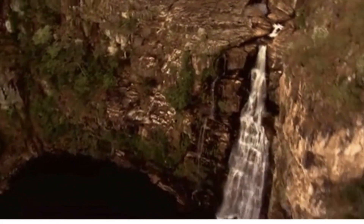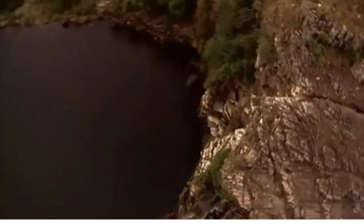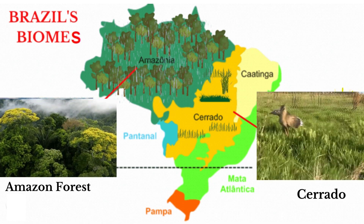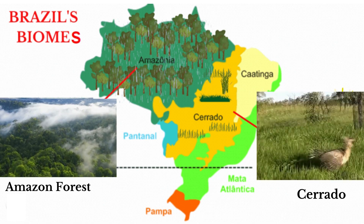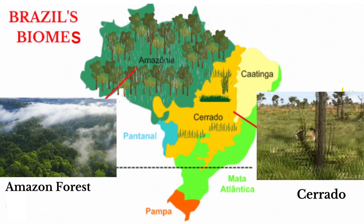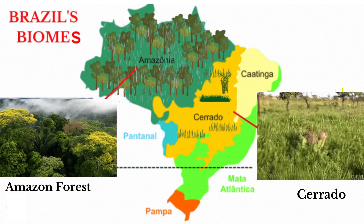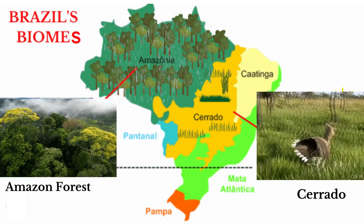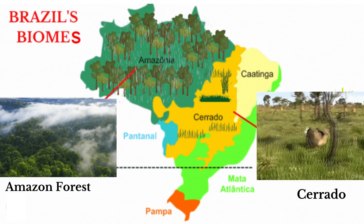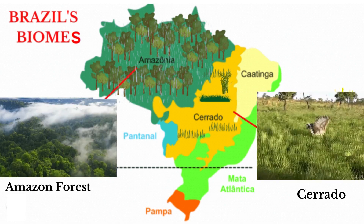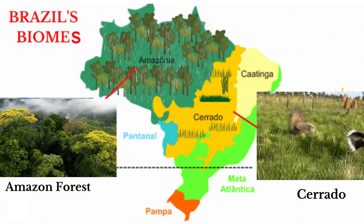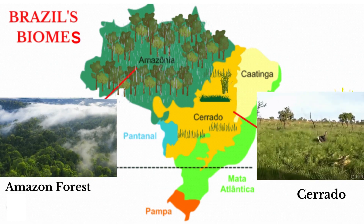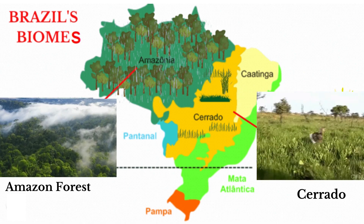The plateau and plains of the Cerrado shelter the headwaters of the country's most important river systems. If we compare the trees of the Cerrado to those of the Amazon forest, they are like the Amazon trees turned upside down — while the Amazon has tall trees with shallow roots, the Cerrado has short trees with deep roots. Deep rooting enables plants to access water stored deeply in the soil during periods of low water availability, and the roots act as giant sponges absorbing and distributing water throughout the region.